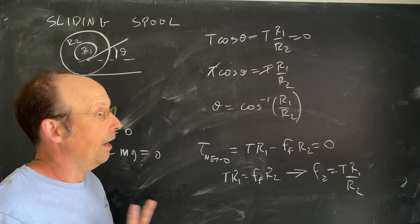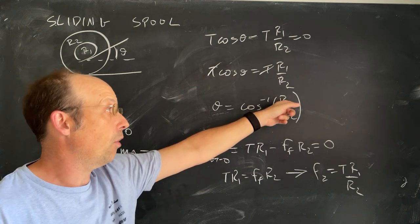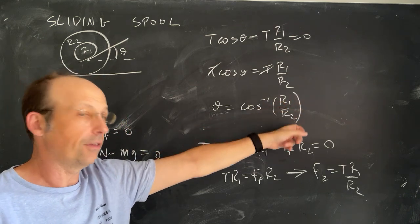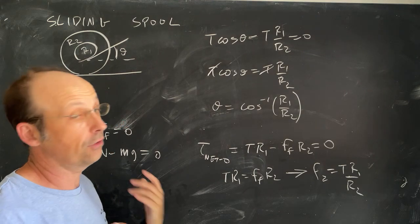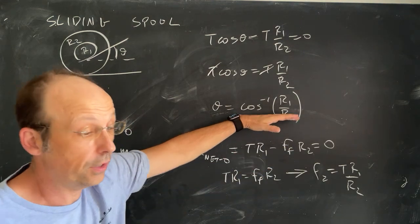The inverse cosine, I have to take the inverse cosine of a number between negative 1 and 1. And so R1 is the inner radius, and it's going to be smaller than the outer radius. So this is a number less than 1, and it's going to give me the angle at which that needs to slide. And it does not depend on the coefficient of friction.